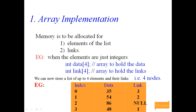Now let us see the array implementation of the linked list. When using an array to implement a linked list, we need two different arrays: one array for storing the elements of the linked list, and one array for storing the links, meaning the address part of the nodes. The data array stores the actual information and the link array holds the address of the next element.